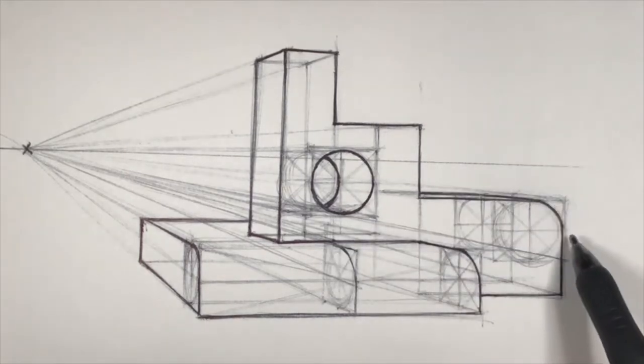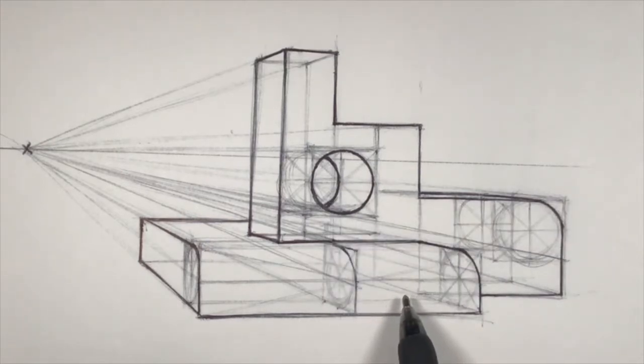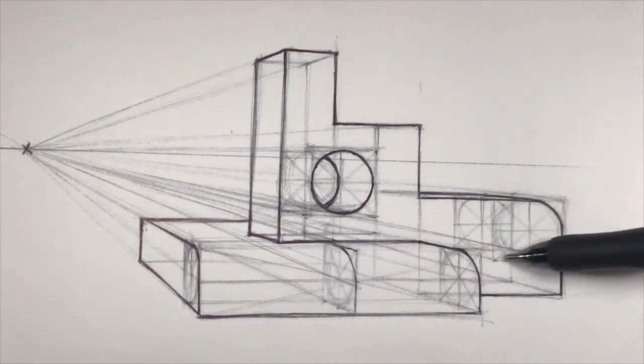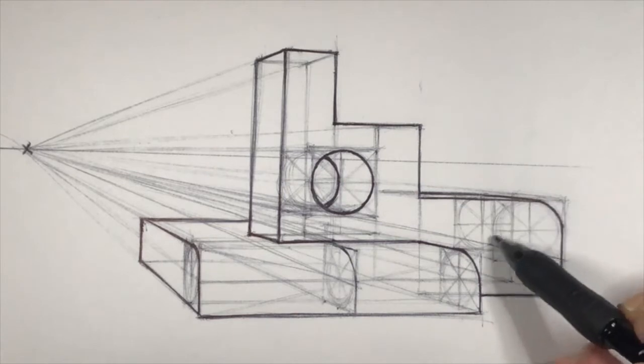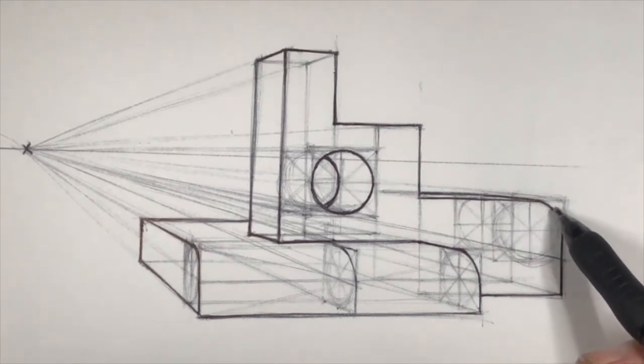This radius feature is actually drawn on a face that is square to us. That face is a square. I've mapped in a circle, and I'm only taking one quarter, the top right-hand corner of that circle, to create this radius edge.